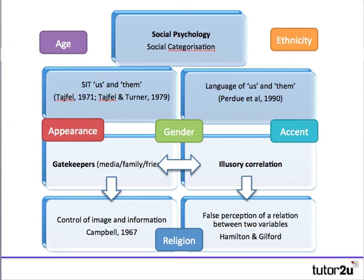The actual process of stereotype formation sometimes comes down to gatekeepers — media, family, friends — who help us create schemas about what a person is like based on how they look, how they speak, where they live, their ethnicity, or religious group. The media, family, and friends control the information disseminated amongst us, shaping our views. This can create an illusory correlation.